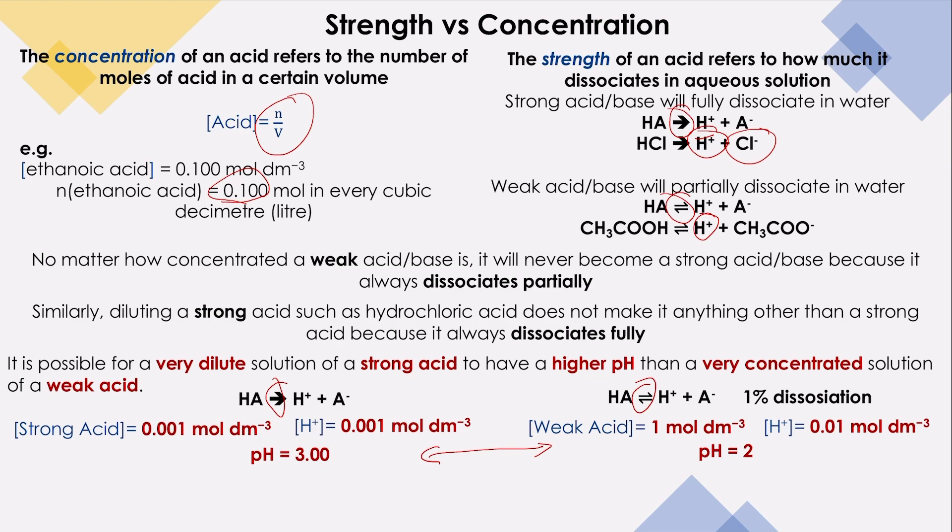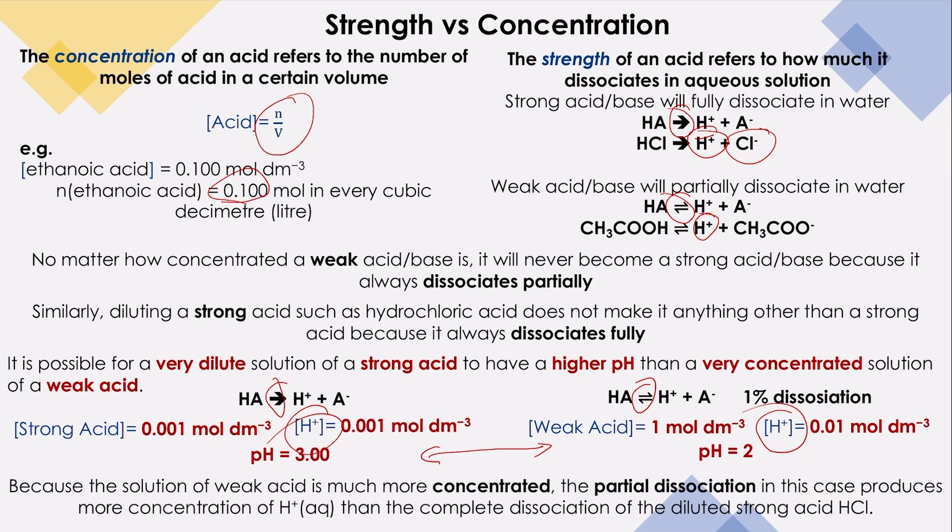But nothing will change in terms of the dissociation, fully or partially. Strong acid will fully dissociate, weak acid will partially dissociate. But the strength - we are referring to what is the amount or the concentration of hydrogen ion that we have in the solution. So because the solution of weak acid is much more concentrated, the partial dissociation in this case produces more concentration of hydrogen ions than the complete dissociation of the diluted strong acid.